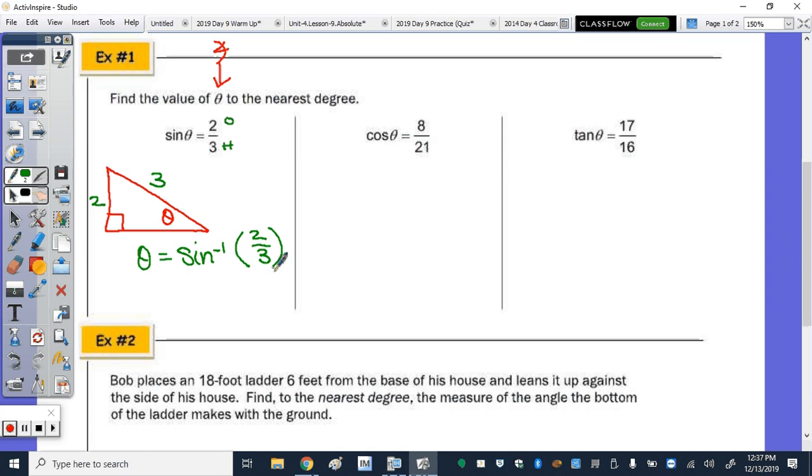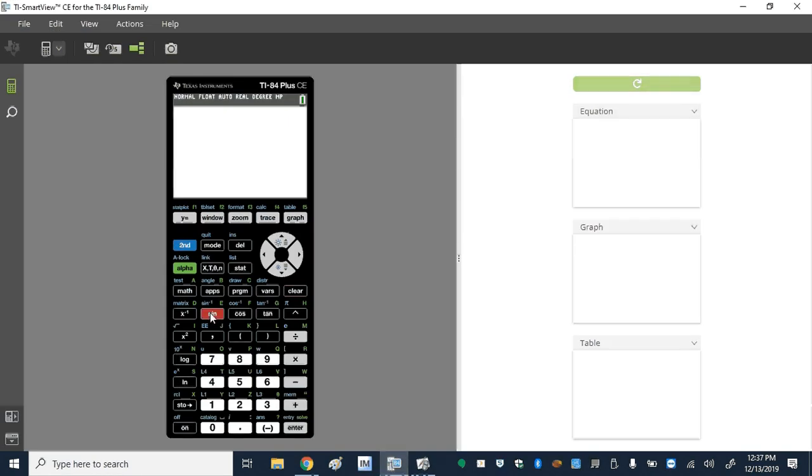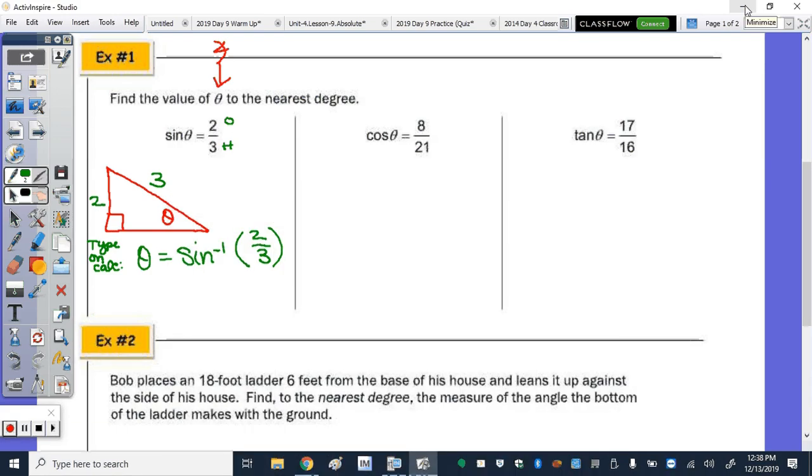So we're not solving anything. We're just writing what we type on the calculator. So open up your calculator and press second sine of 2/3. So alpha link gives you the fraction key. So inverse sine of 2/3 gives us an angle measure of 41.810. So that's how you go backwards. So given the ratio, we can find the angle measure by going backwards using that inverse key. So I would encourage you to write the decimal, and rounding to the nearest degree, it's approximately 42 degrees.